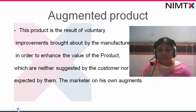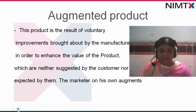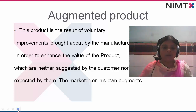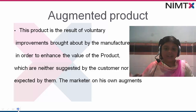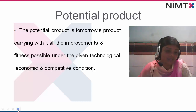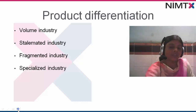For example, Nestle and how Maggi was banned in India, how Nestle dropped down and what problems they faced — that can be a political environmental effect. So the potential product is tomorrow's product, carrying with it all improvements and advancements possible under the given technological, economic, and competitive conditions, which have not yet happened. A potential product is still not in the market.